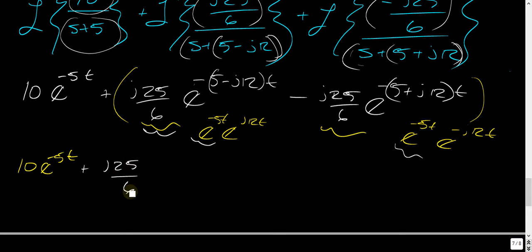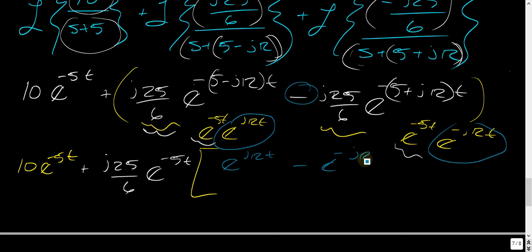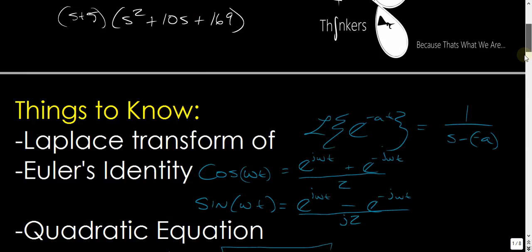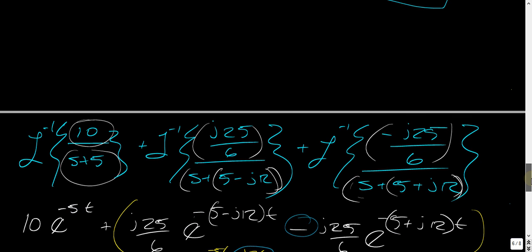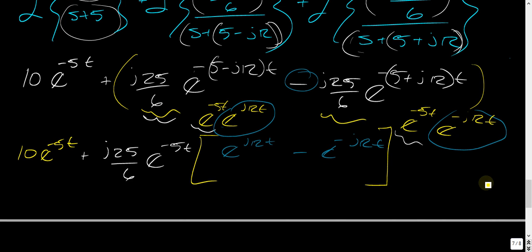So, plus J25 over 6 E to the minus 5T. Multiplied by, now whatever's left in there, which is going to be E to the J12T minus E to the minus J12T. Now, in order to use Euler's identity for this, let's go look at it. Let's go look at Euler's identity and see what it says. So we have a minus down there. This has a plus and a two. So we have this minus, so we're going to end up making it a sine, but we need a J2 on the bottom.